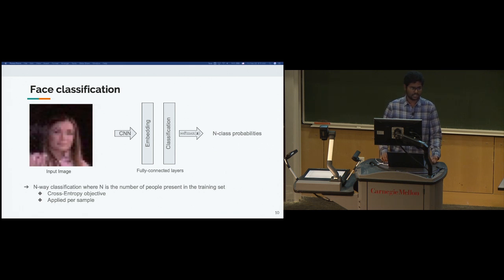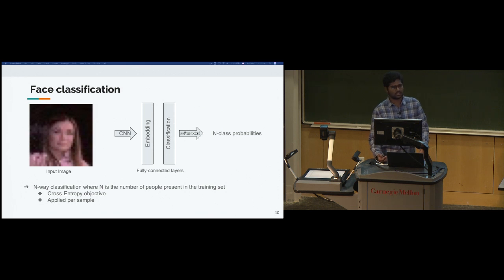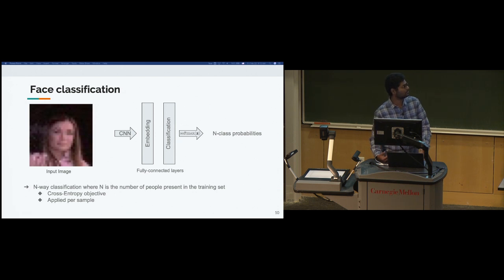For face verification, you pass an input image through your CNN architecture, whose output goes through an embedding layer. The output of the embedding layer is a two-dimensional embedding that you pass through a classification layer with softmax to get N-class probabilities for the loss. For verification, you use just the embedding layer — instead of passing the embedding to the classification layer, you use it as input to a distance metric. You get embeddings for two images and calculate the distance between them.